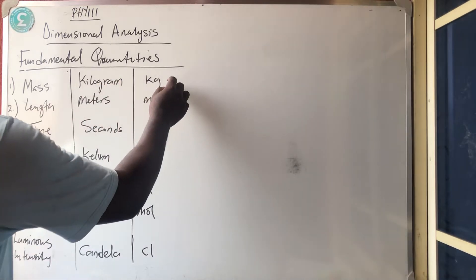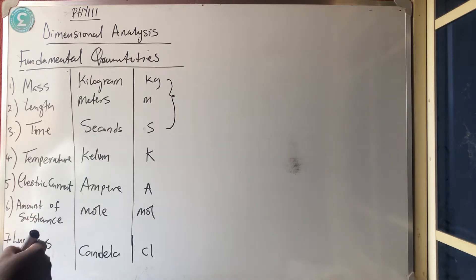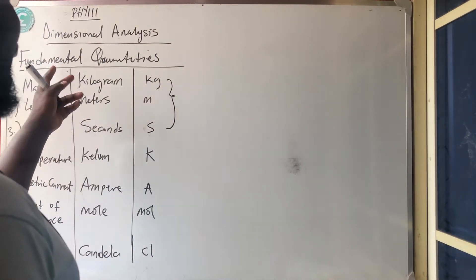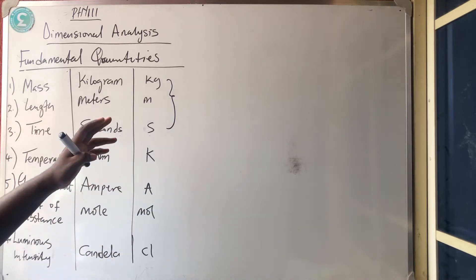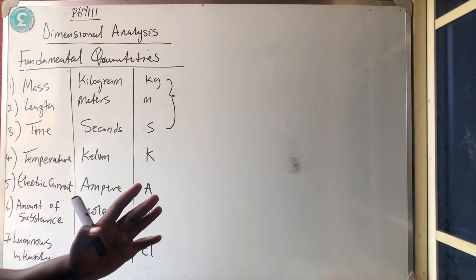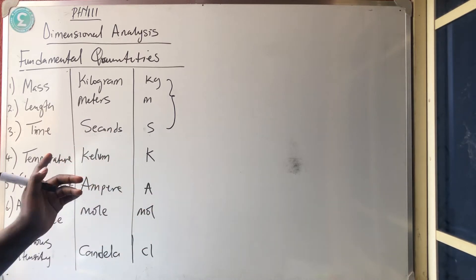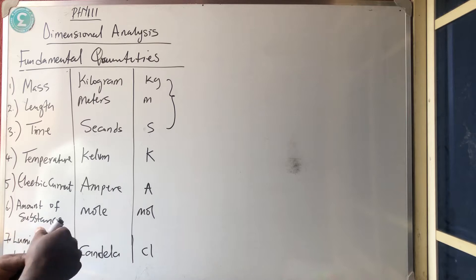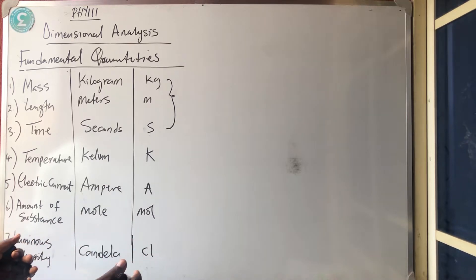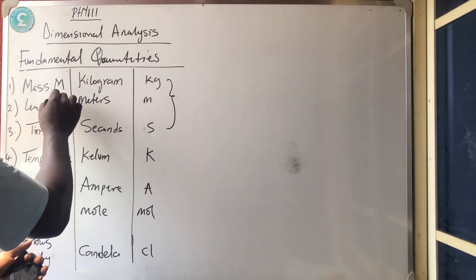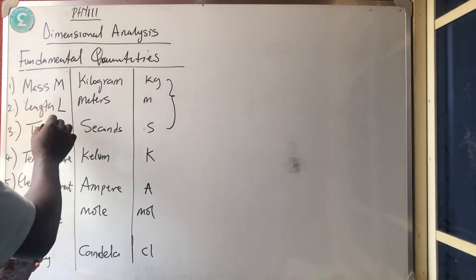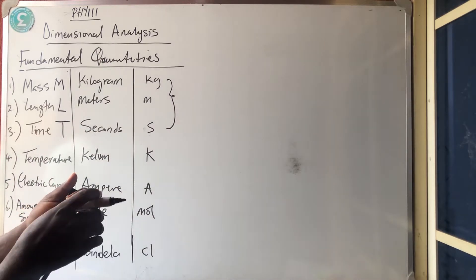The main three you need to know are mass, length, and time — that is what we use to do our calculations in dimensional analysis. In dimensional analysis, you need to know the unit of a particular thing; once you know the unit, it will help you get the dimension. For mass, we use capital letter M; for length, capital letter L; and for time, capital letter T.